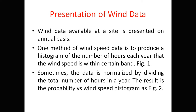Sometimes the data is normalized by dividing by the total number of hours in a year, and the result is a probability versus wind speed histogram. So the two methods are: a histogram of annual hours, and a normalized version showing probability versus wind speed.